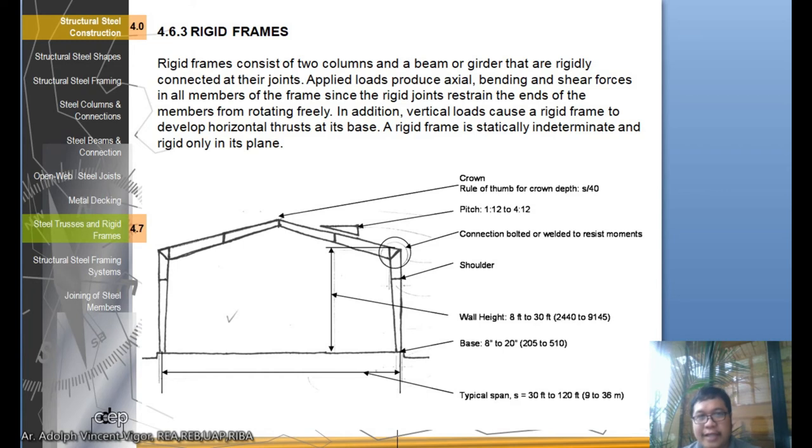Good day class, today we're going to have a short lecture on rigid frames. Rigid frames consist of two columns and a beam or girder that are rigidly connected at their joints. Applied loads produce axial bending and shear forces in all members of the frame since the rigid joints restrain the ends of the members from rotating freely. In addition, vertical loads cause a rigid frame to develop horizontal thrust. A rigid frame is statically indeterminate and rigid only in its plane.